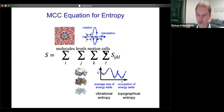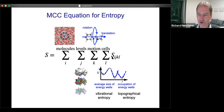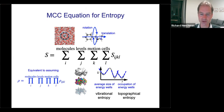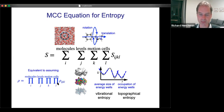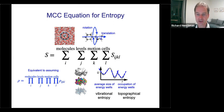We have two possible kinds of term: one relating to the average size of the energy wells, called the vibrational entropy, and another relating to the occupancy of all the different energy wells, called the topographical entropy — a general word encapsulating conformation, position, and so on. This approximation is tantamount to assuming the probability distribution function is a product of terms for each of these four kinds of degrees of freedom. In practice, the challenge is making this approximation valid while running a molecular dynamics simulation.